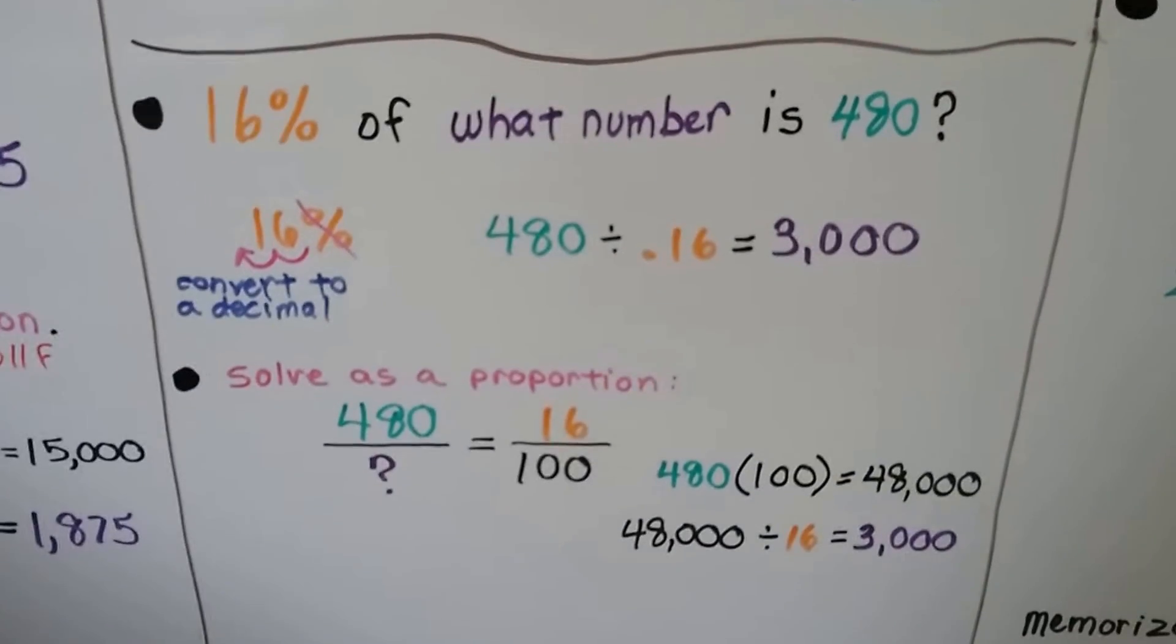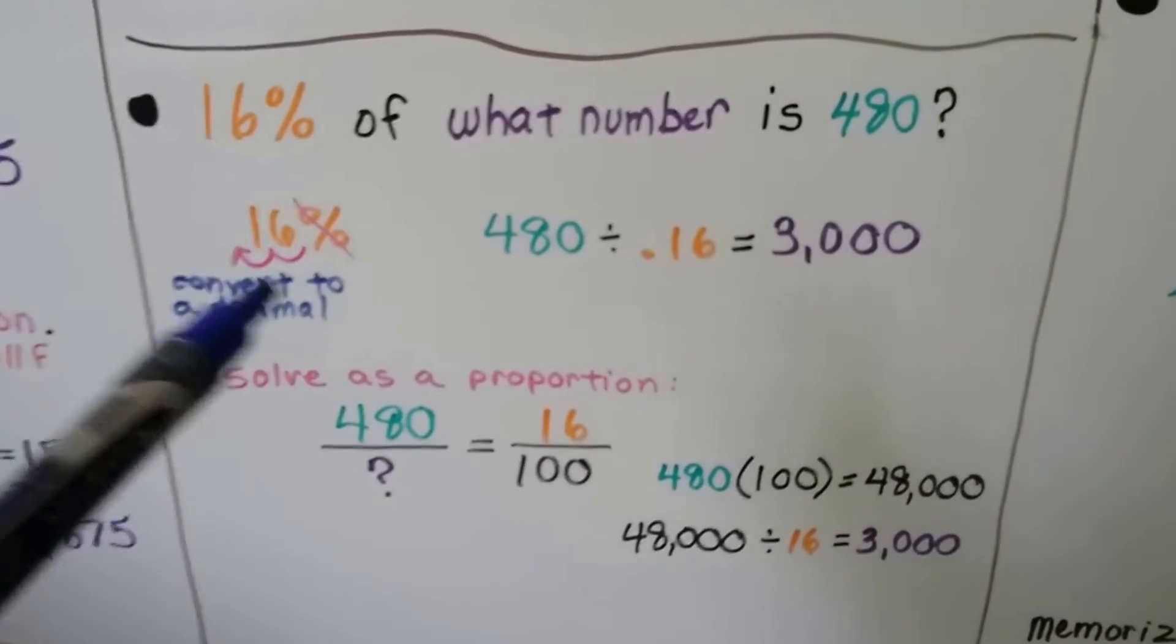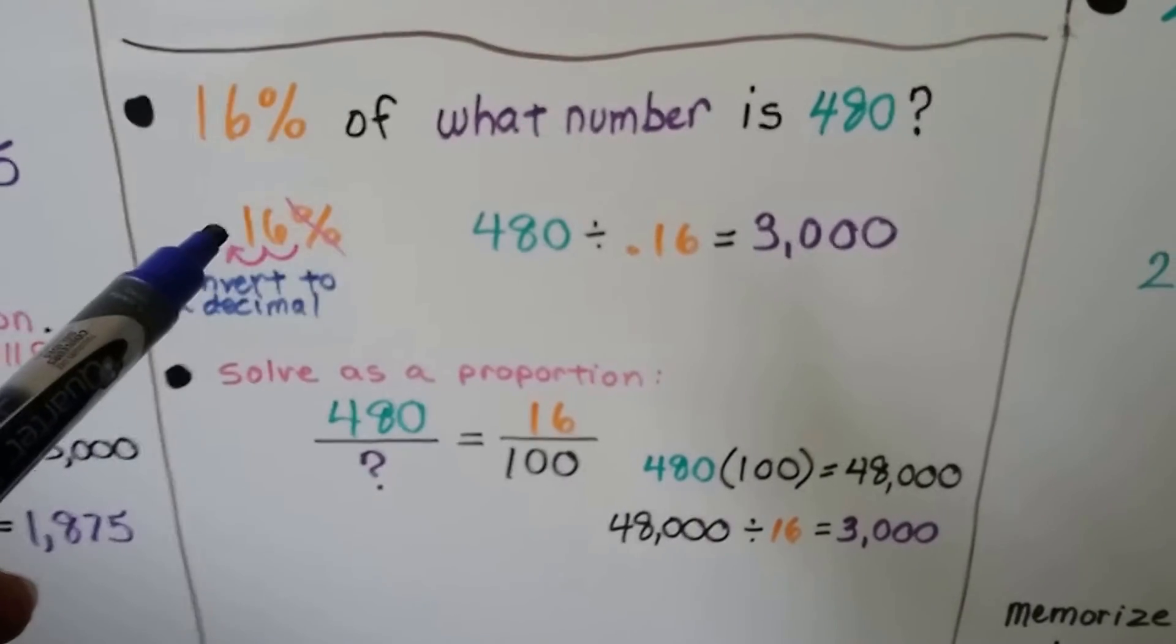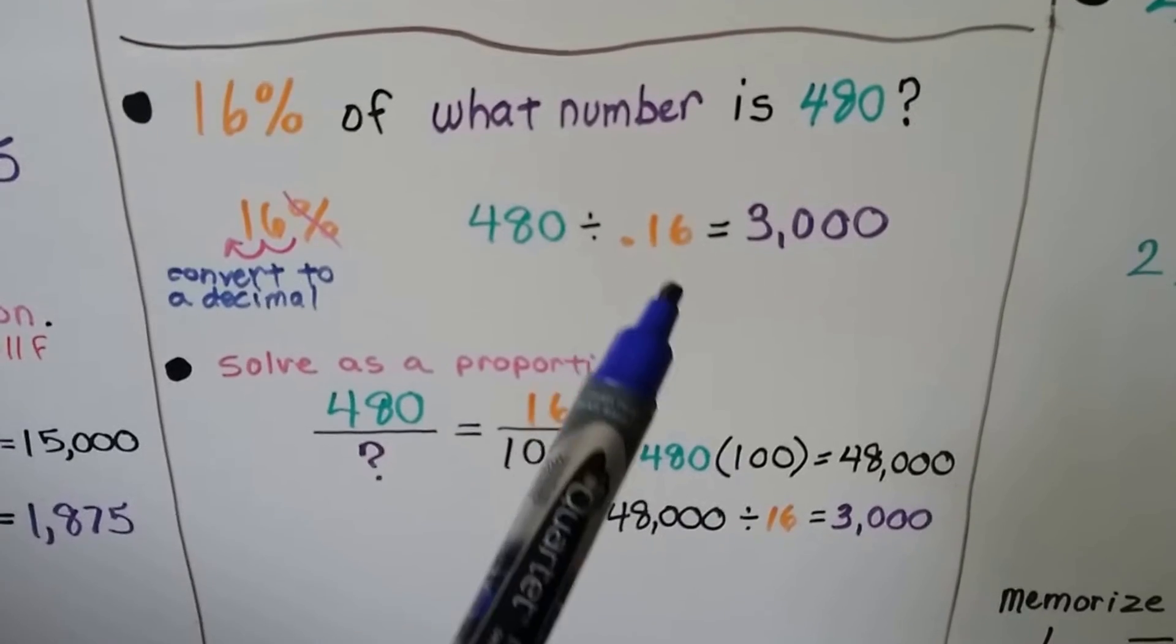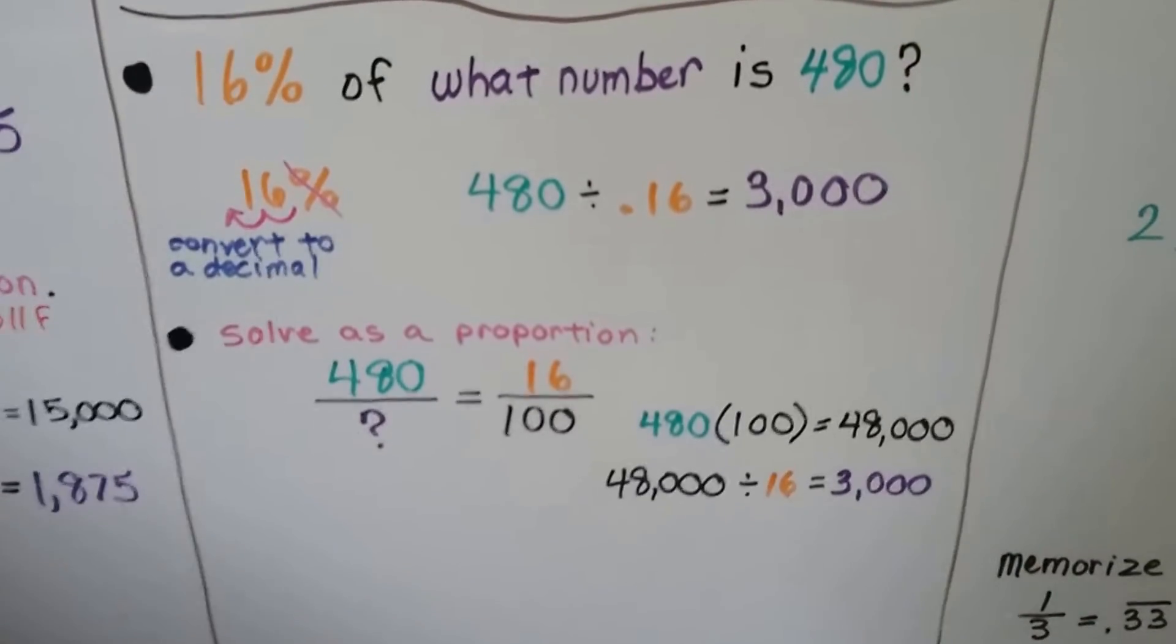16% of what number is 480? We turn this into a decimal. Hop, hop, put the decimal point, get rid of the percentage sign, and do 480 divided by .16. Quickly on a calculator, we get 3,000.